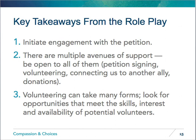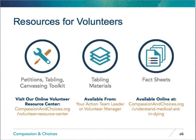Now that we've talked about these actions in more detail, take some time to read through the petitions, tabling, and canvassing toolkit for more tips and helpful checklists. Ask your action team leader or volunteer manager for tabling materials including petitions, our quarterly magazine, palm cards, brochures, and buttons. Review and print out the most recent fact sheets from our website, located at www.compassionandchoices.org/understand-medical-aid-in-dying. This concludes the Volunteer Action Network training, and we are excited to work with you to expand end-of-life options in your community. Thank you for all you are doing to push this movement forward.